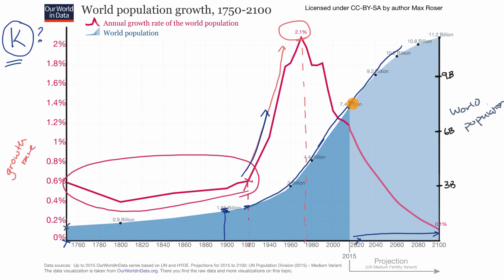We don't know how sustainable that would be if our growth rate were to continue, but it does look like that growth rate is moderating. At least the projections in this chart have the population starting to approach 11 billion, maybe over time 12 billion, and maybe stabilizing someplace around there. But it's an interesting thing to think about.